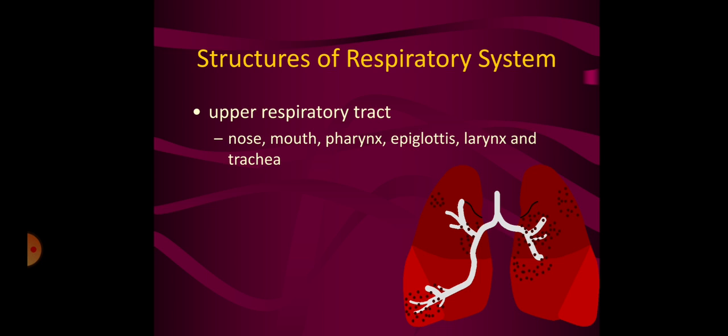The upper respiratory tract involves the nose, mouth, pharynx, epiglottis, larynx, and trachea. The lower respiratory tract includes the bronchial tree and lungs as shown in this diagram.